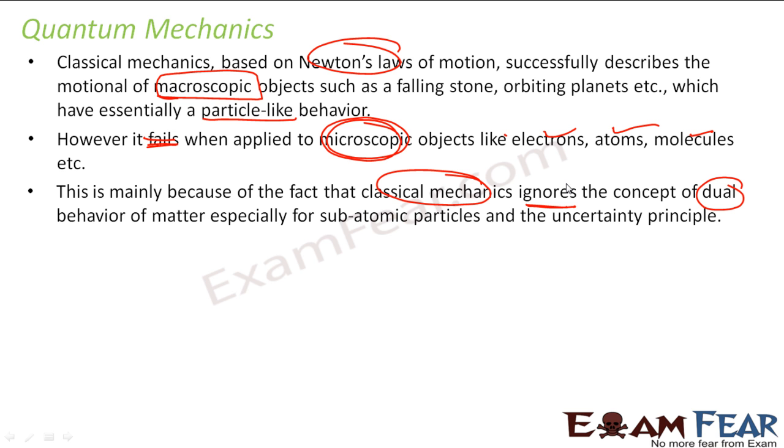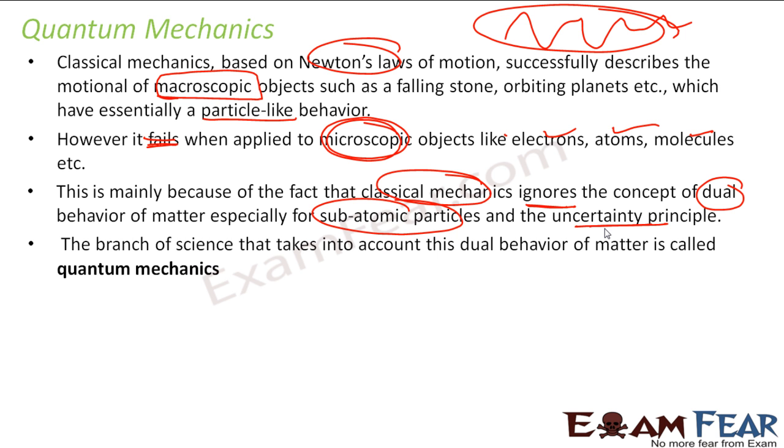So in that case, it ignores the dual theory and for subatomic particle, the wave nature also plays a dominant role. And since this part is neglected, you get invalid results. So classical mechanics, classical physics is not able to answer a lot of things in subatomic particle level. It is a branch of science that deals especially with the microscopic objects in the dual behavior of the matter and that branch is called quantum mechanics.